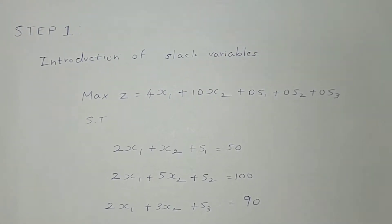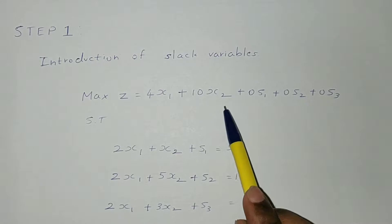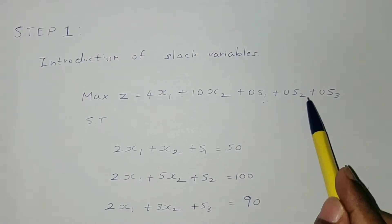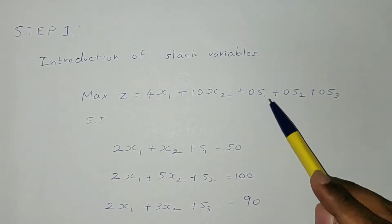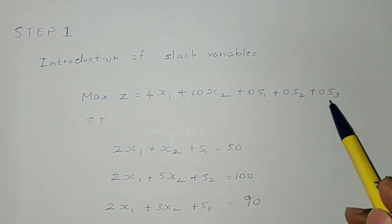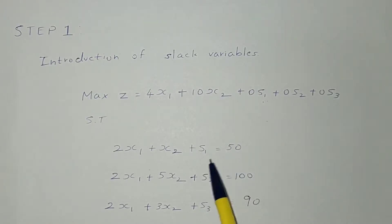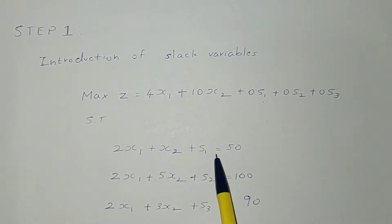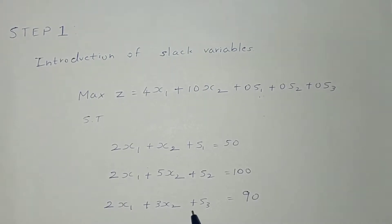The first step is introduction of slack variables. You have to add slack variables to the objective function. Max z is equal to 4x1 plus 10x2. The number of slack variables depends upon the number of constraints. Since there are three constraints, we take three slack variables s1, s2, and s3. Adding slack variables removes the inequality sign: 2x1 plus x2 plus s1 equals 50, 2x1 plus 5x2 plus s2 equals 100, and 2x1 plus 3x2 plus s3 equals 90.